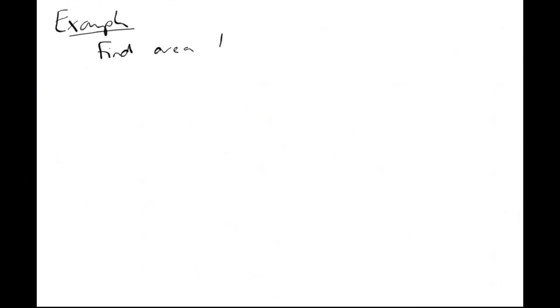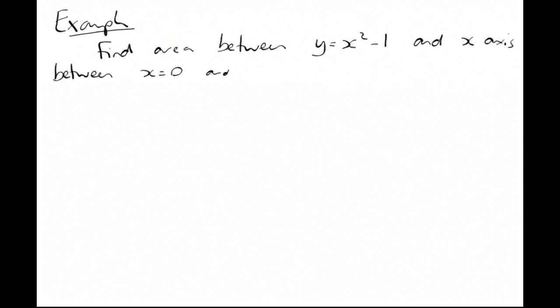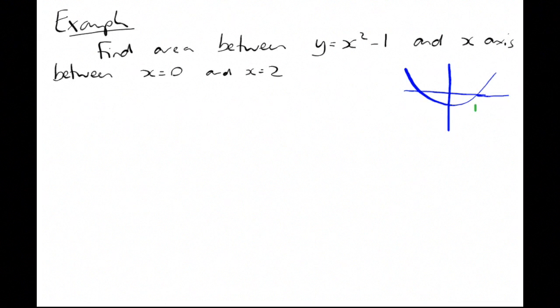Another example: find the area between y equals x squared minus 1 and the x-axis, between x equals 0 and x equals 2. It's worth doing a quick sketch on this one, and you spot straight away that the curve is going to cross the x-axis.